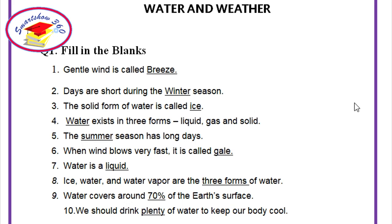Question number 1. Fill in the blanks. 1. Gentle wind is called dash — it is breeze. 2. Taste is sour during the dash season — it is the winter season. 3. The solid form of water is called dash — it is ice.